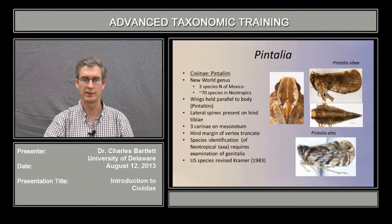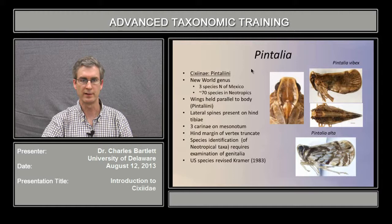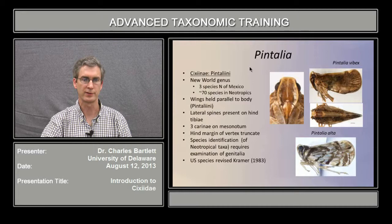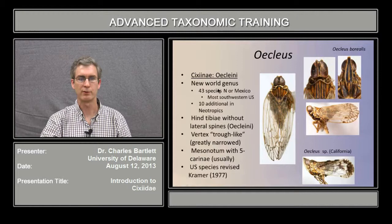The tri-pentaleinae is easily recognized by the fact that the wings are held parallel to the body, instead of weakly tent-like in other groups of 6-seidaes. The tri-pentaleinae has 2 genera north of Mexico, and the genus Pentalea is the only common genus found north of Mexico. Pentalea consists of 3 species north of Mexico, which can be recognized without dissection; however, there are an additional 70 or so species in the Neotropics. It is similar to Seixaeus in that the mesonotum has 3 charine, the posterior margin of the vertex is truncate, and lateral spines are present on the hind tibia.